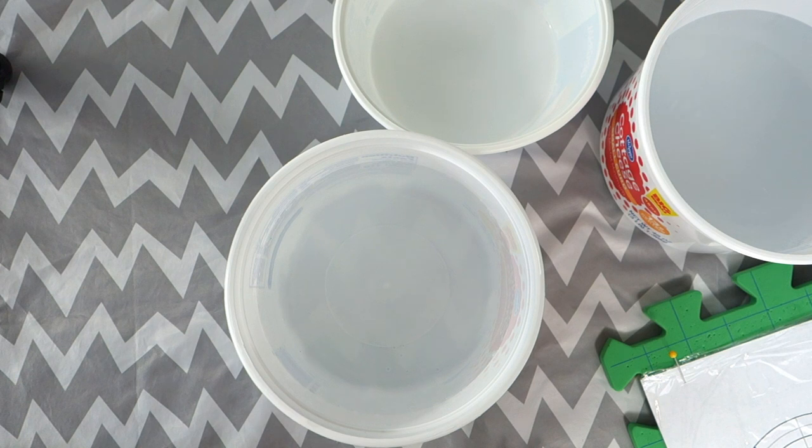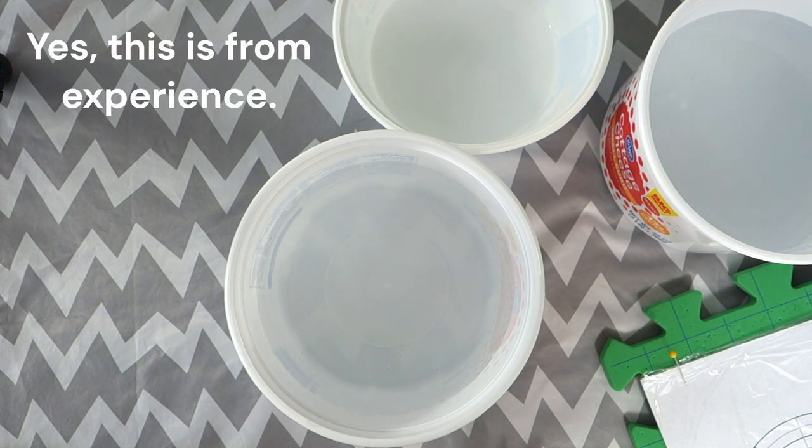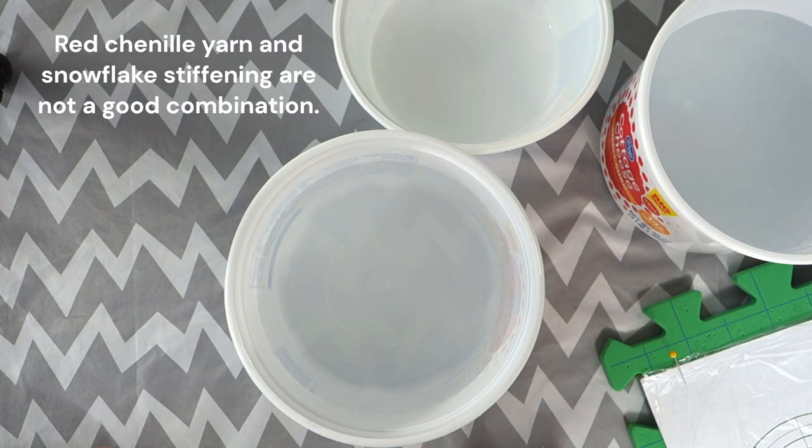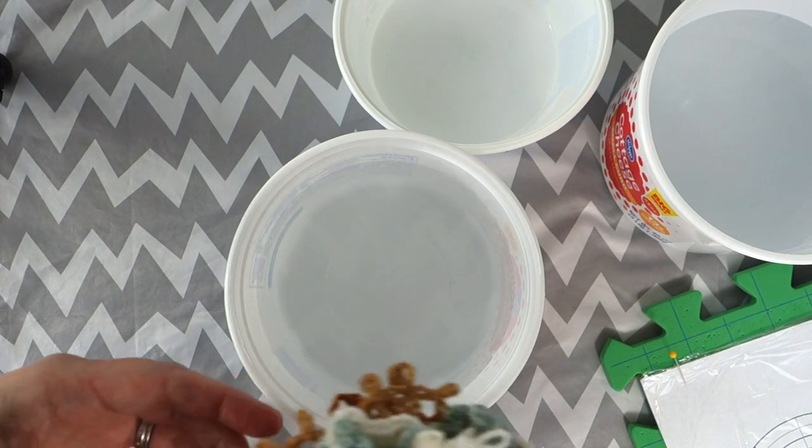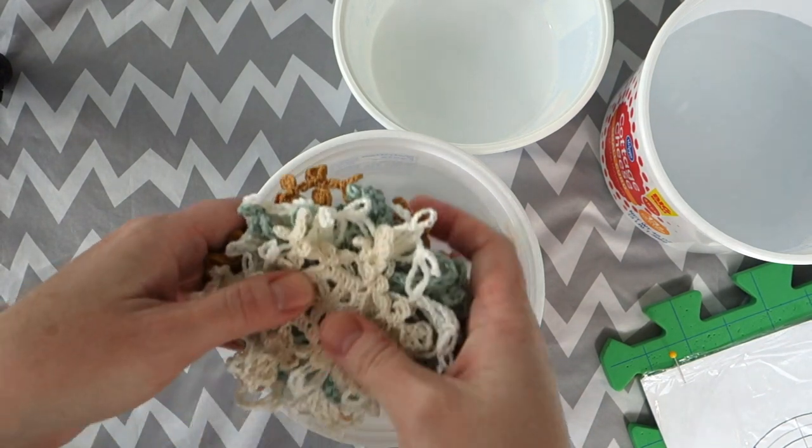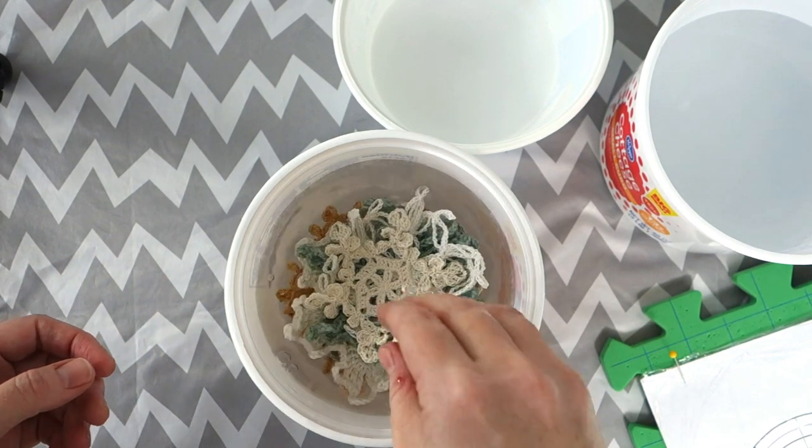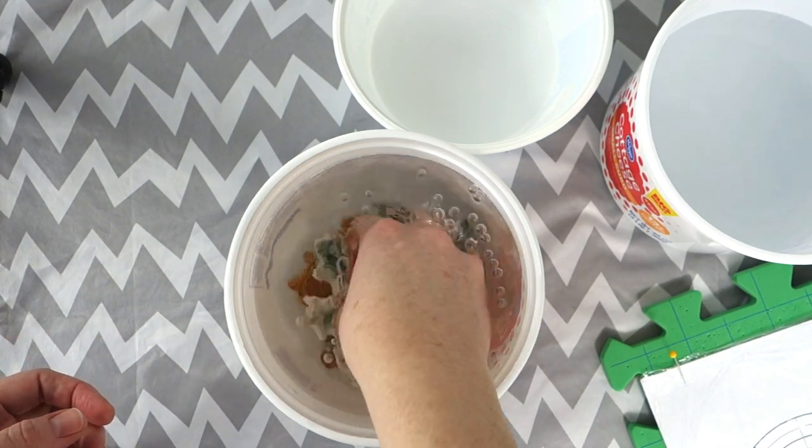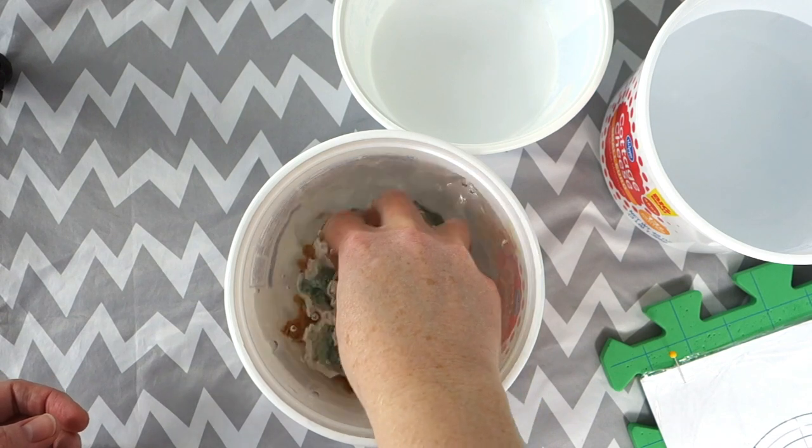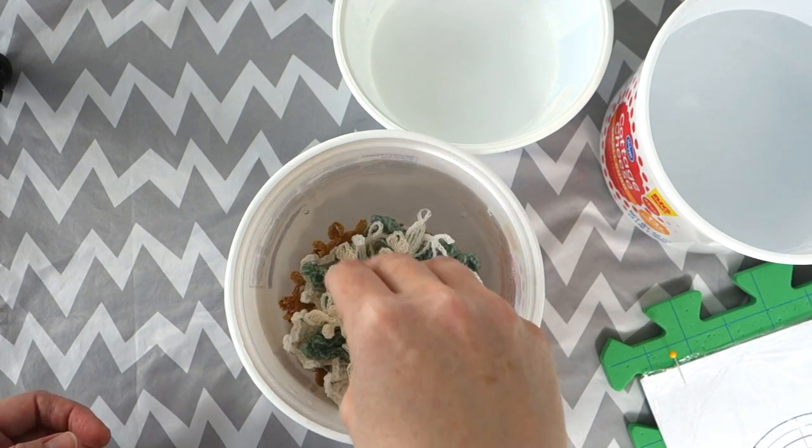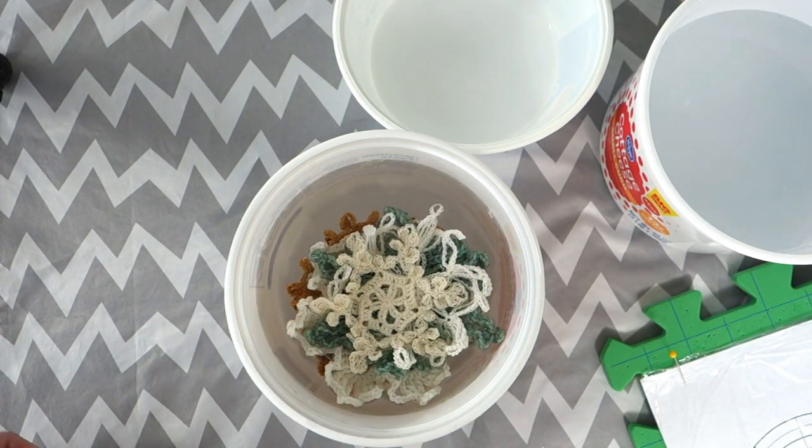One last thing before we get started on our actual blocking, I recommend checking your area for lint. You don't want to have little bits of red fuzz stuck all over your snowflakes. To get started with blocking, usually I start by actually sticking all of my snowflakes in my first bowl of clean water container. This gets them pre-wet and ready the way that I like.